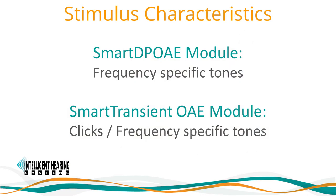There are primarily two types of stimuli used for clinical OAE testing. Distortion product OAEs are based on two frequency-specific tone stimulations, where the relationship between the frequency pair is typically F2 equals 1.22 times F1. In contrast, transient OAEs use a single short duration 75 microsecond click or a frequency-specific tone.